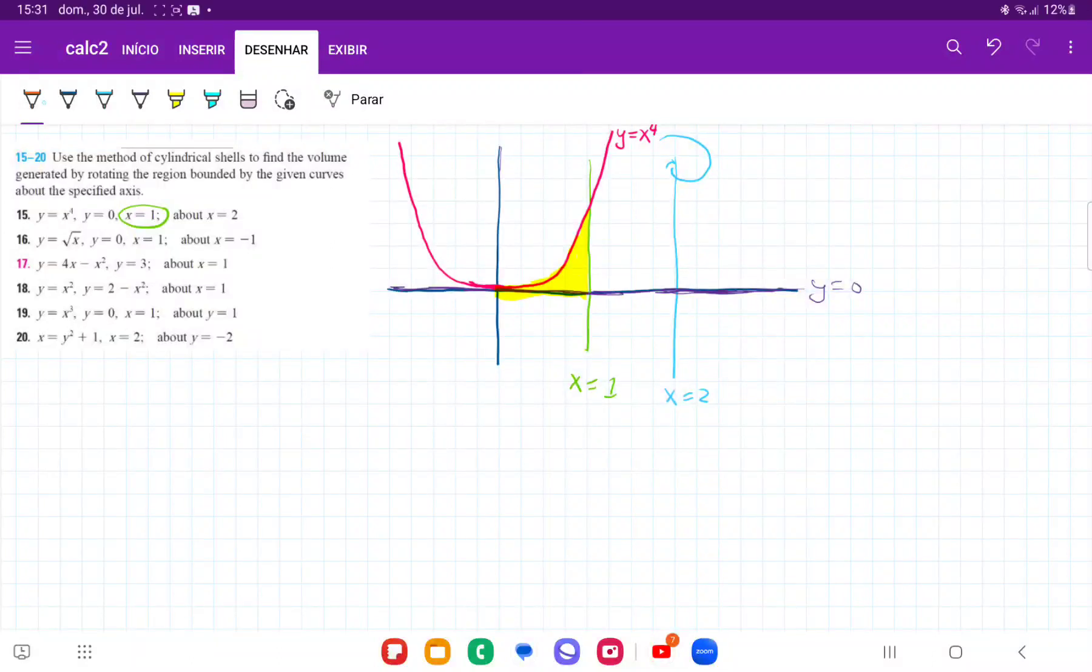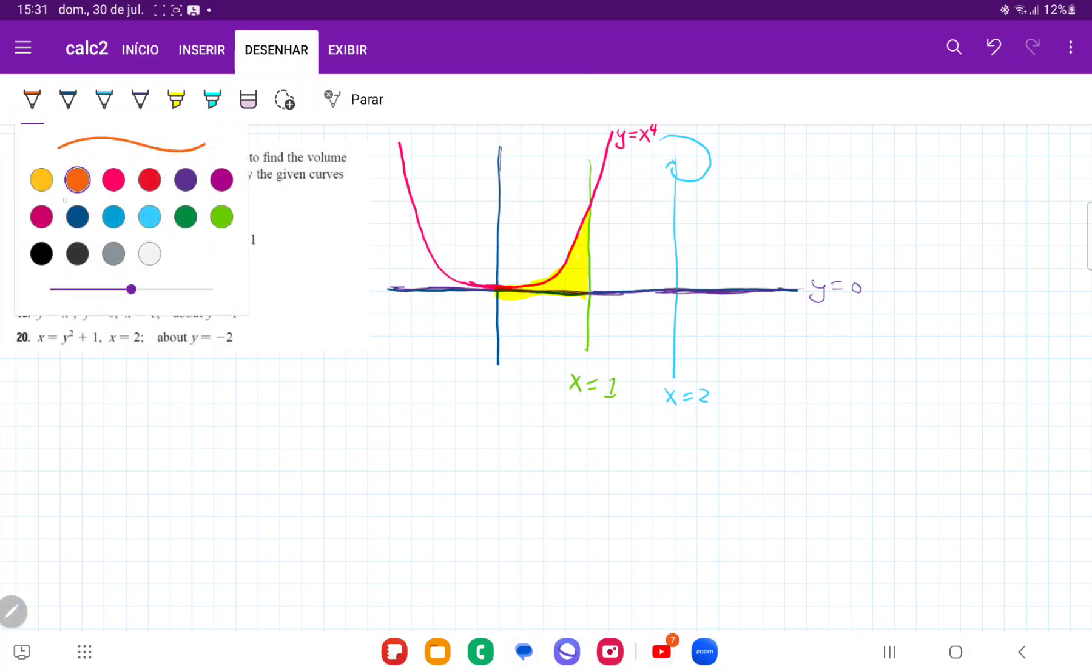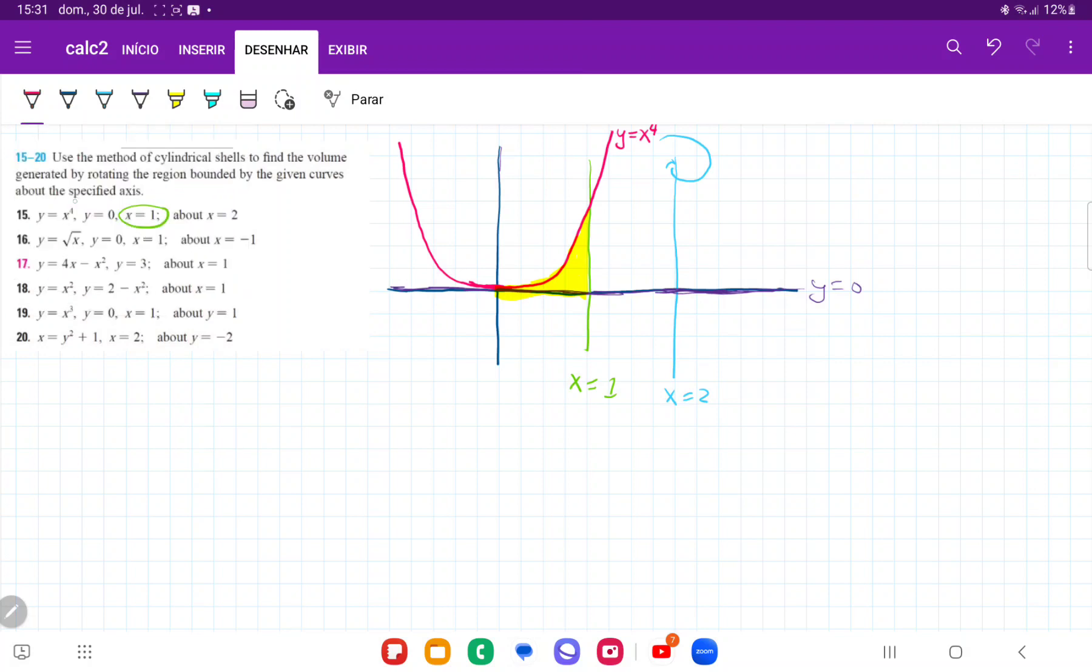So for number 15, we are taking the area bounded between these curves and we are revolving about the line x equals 2. So we've gone ahead and I've drawn these curves, and we can see that the area bounded between them is this part in yellow.